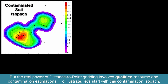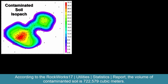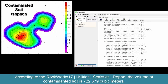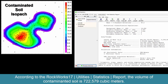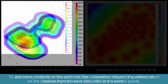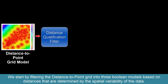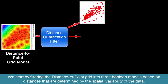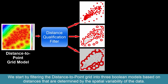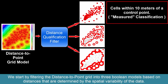To illustrate, let's start with a contamination isopack. According to the Rockworks 17 Utilities Statistics report, the volume of contaminated soil is 722,579 cubic meters. To add more credibility to this estimate, the volume metrics should be qualified based on the distance from the estimated cells to the control points. We start by filtering the distance to point grid into three Boolean models based on distances determined by the spatial variability of the data. The measured classification will be considered as cells within 10 meters of a control point.